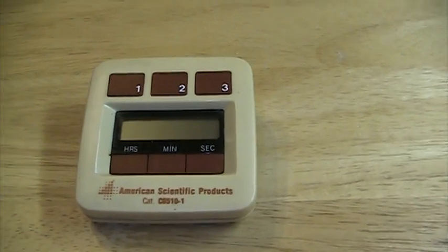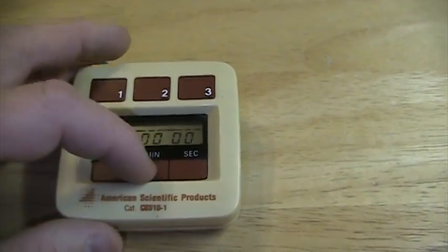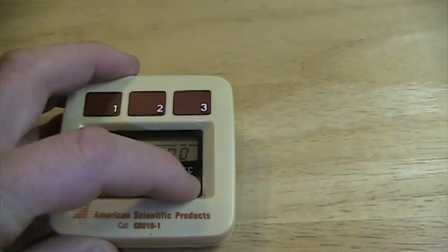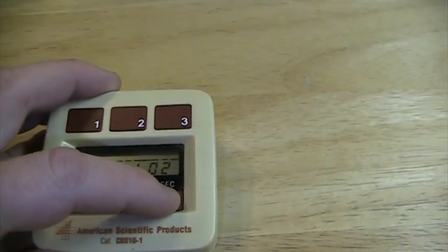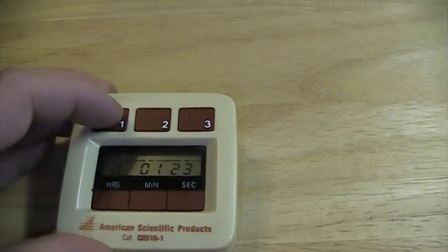It's also possible to operate multiple timers at once. For example, you can turn on timer number one and input a certain amount of time on it. The button does repeat. You just have to hold it down the right way. I'll go ahead and start that timer.